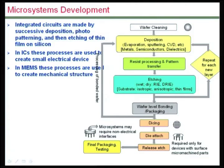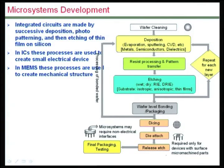A key difference is that we make extensive use of etching in the fabrication of microsystems, whereas in microelectronics we quite often require doping or ion implantation process steps. Although we still have resist deposition and patterning steps cycling even in IC fabrication, these modifications are what allow us to create moving components for building microsystems.